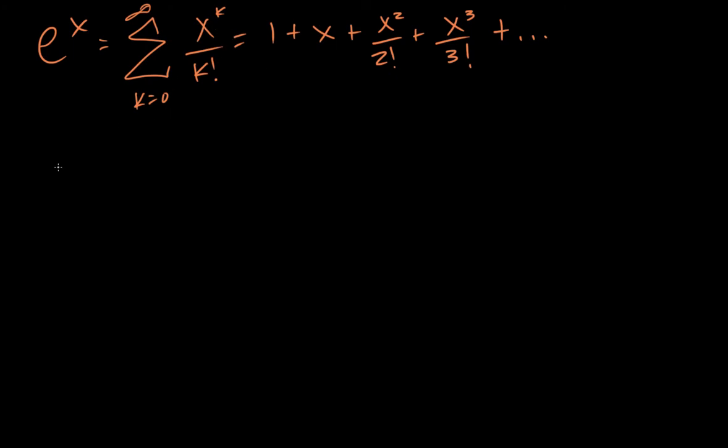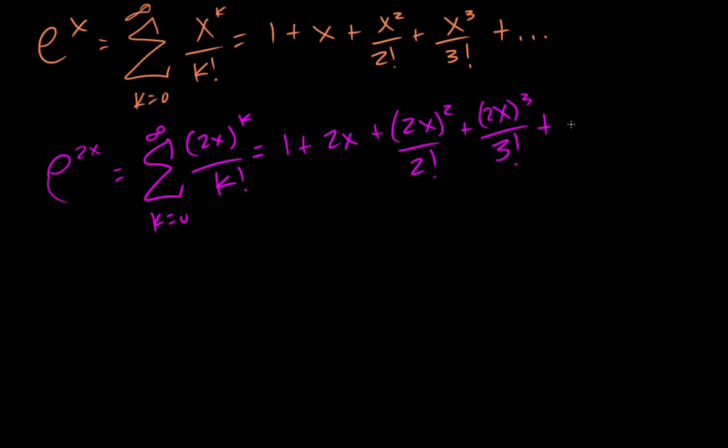So it says using this, find e to the 2x. Okay, so basically we're just going to replace all of the x's with 2x's. And over here we do the same thing. And if we simplify that, I'll just leave it in factorial form.